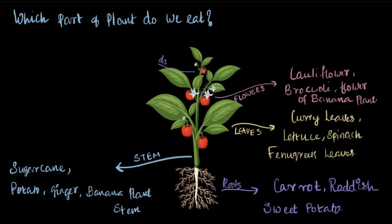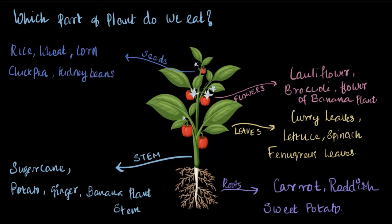Moving on to seeds, the most important food that we consume on a daily basis is rice, wheat, and maybe corn. These three are the most important foods that we consume in our country, and they are actually seeds of a plant. Rice is a seed of a rice plant, and similarly wheat and corn. Chickpea, kidney beans, and groundnut are some other examples of seeds that we consume as food.